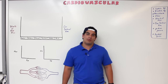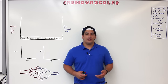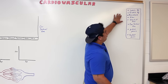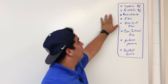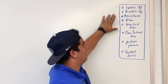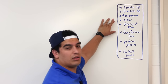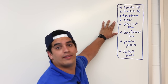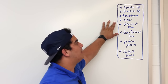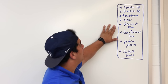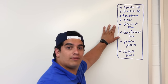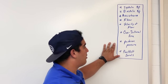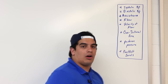Alright Ninja Nerds, in this video we're going to talk about blood pressure — a little intro. We're going to discuss systolic blood pressure, diastolic blood pressure, resistance, flow, specifically flow rate in centimeters cubed per minute, velocity of blood flow, cross sectional area of blood vessels, perfusion pressure, and Korotkoff sounds.